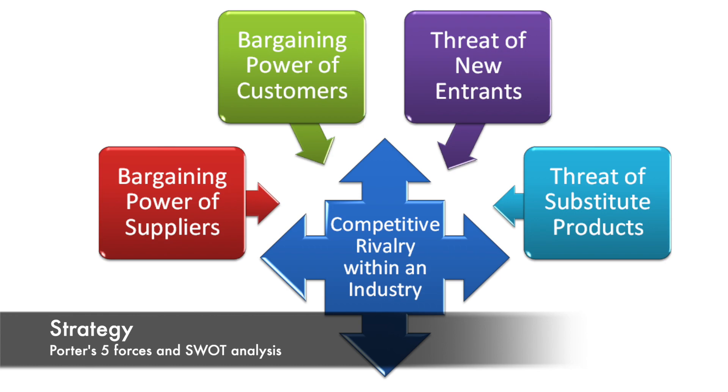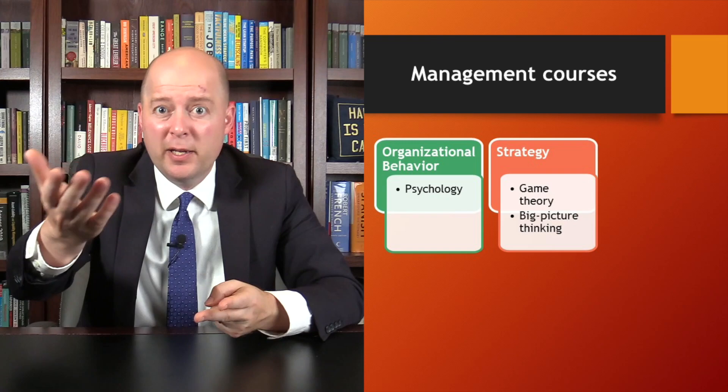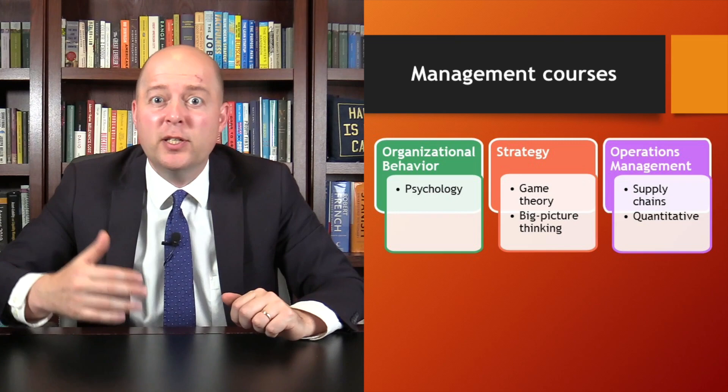If you're required to take a course in management, you could encounter a variety of topics, as there are many different types of management courses. In a strategy course, you'll learn about Porter's five forces and doing a SWOT analysis. In an organizational behavior course, you'll learn about power and politics in organizations. In an operations management course, you'll learn about bottlenecks, lean thinking, and the bullwhip effect. If you have a choice, I suggest taking organizational behavior if you're into psychology, strategy if you like game theory or big-picture thinking, and operations management if you're into supply chains and want to build your quantitative skills.